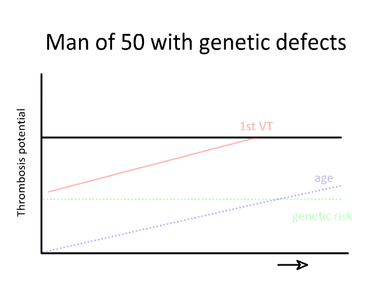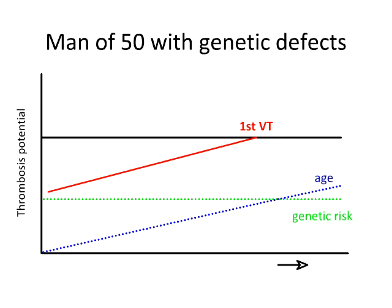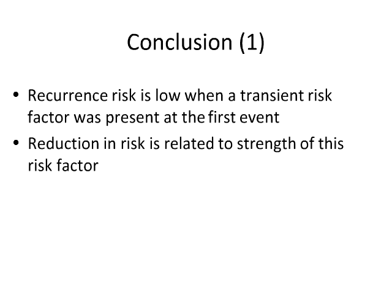The third group are the idiopathic ones — a person of 50 exposed only to age and a considerable number of genetic defects. This combination leads him to cross the thrombotic threshold. Because these risk factors are fixed, they cannot go down. It's very difficult for him to lower his thrombosis potential, and therefore he will stay at the same level of risk in the future. My first conclusion is that recurrence risk is low when a transient risk factor was present at the first event, and the reduction in risk is related to the strength of that risk factor.